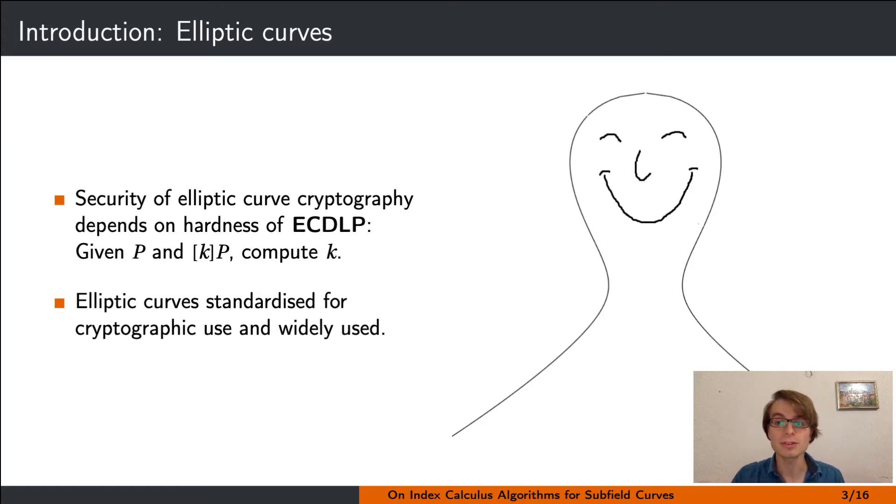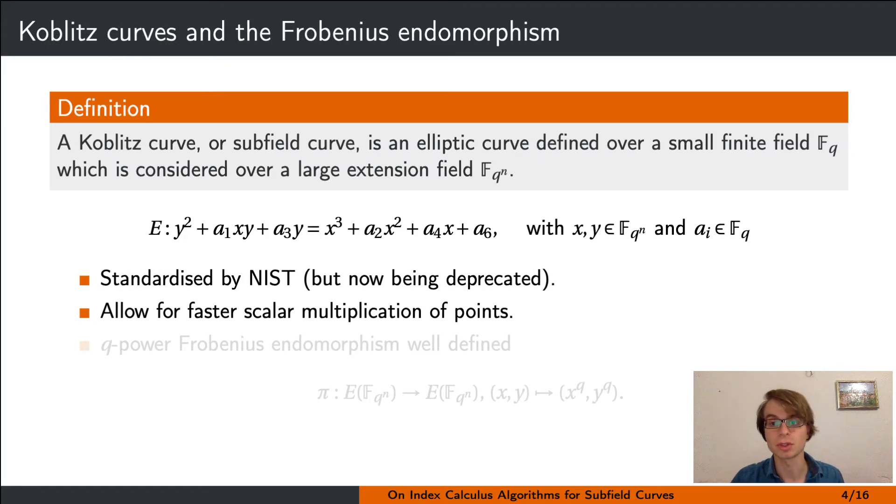The elliptic curves we looked at in this project are so-called Koblitz curves or subfield curves. These are elliptic curves which are defined over a small finite field Fq but considered over a large extension field Fq^n. Or put differently, the curve equation has coefficients in the subfield Fq but we consider all solutions over the extension field. In particular, the ECDLP lives in the extension field.